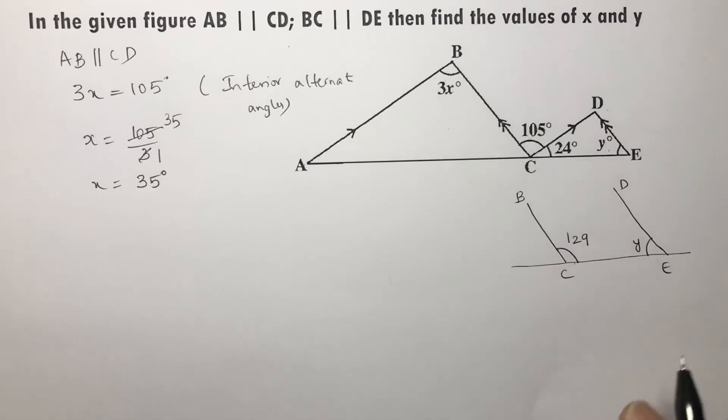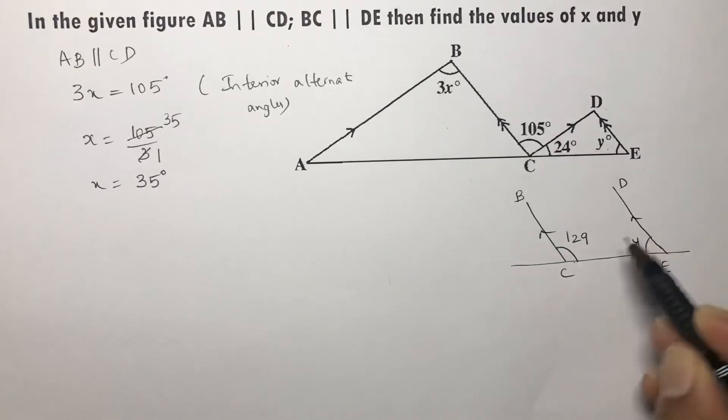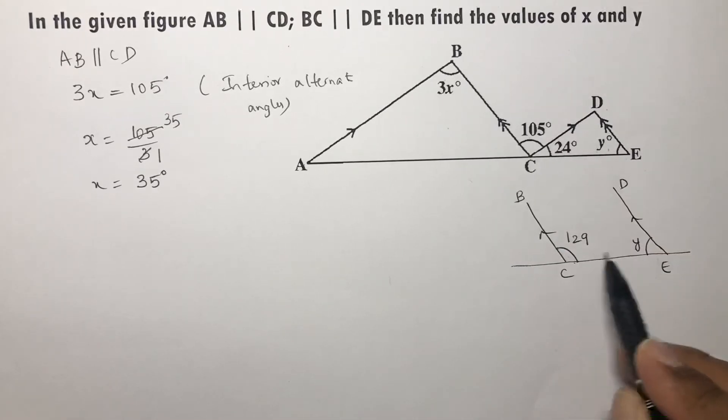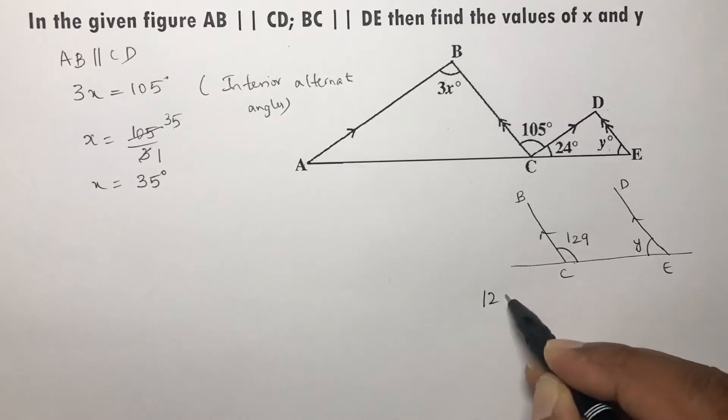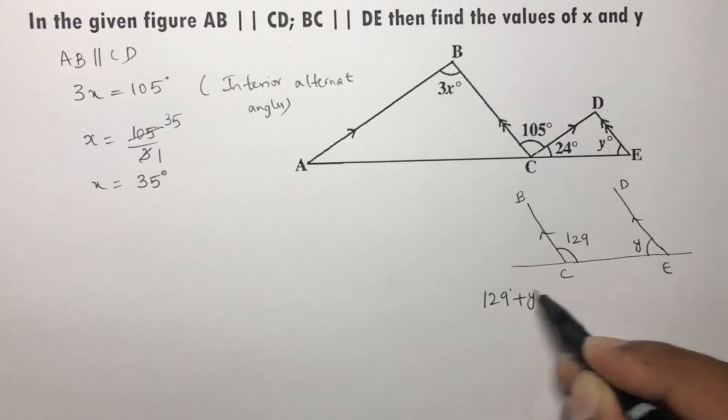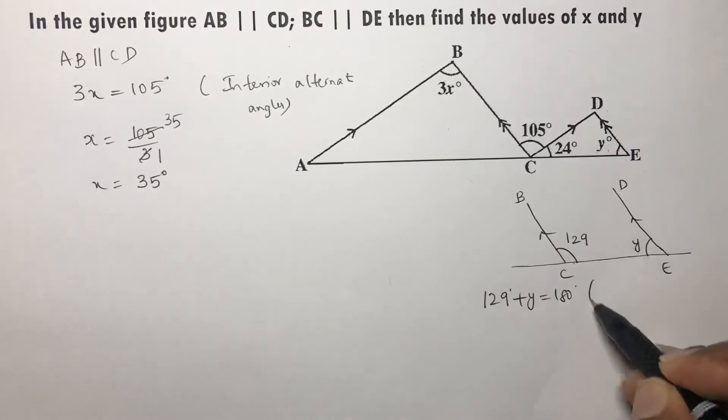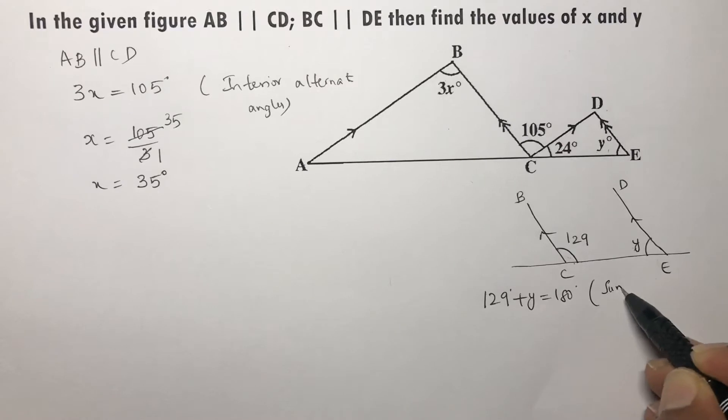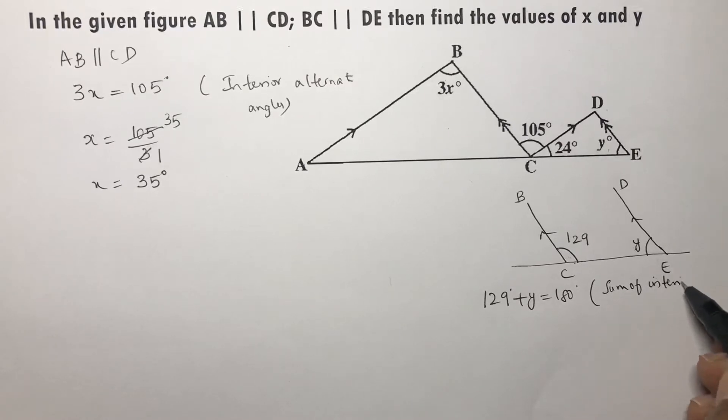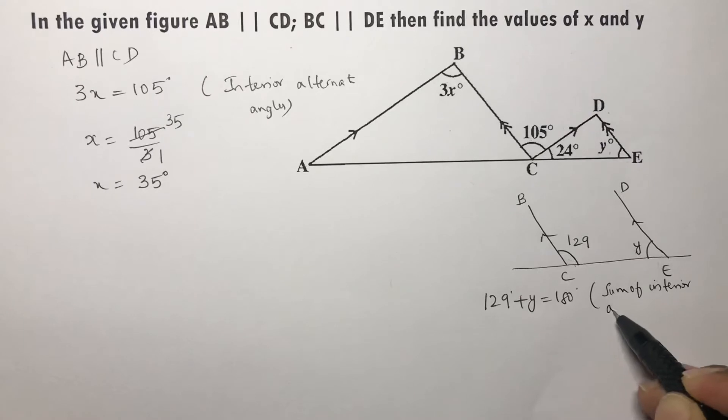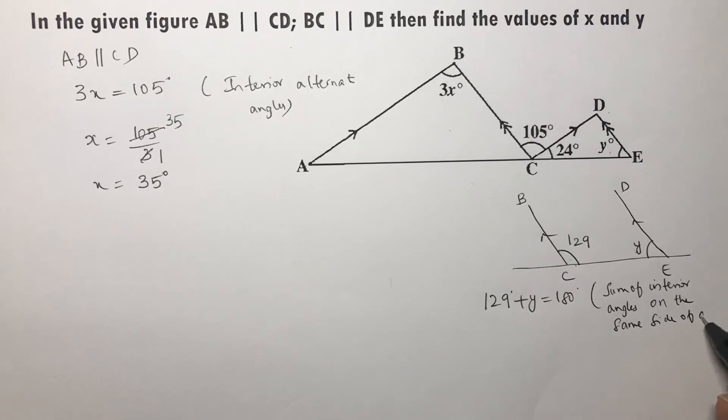Here you can use the property that sum of interior angles on the same side of a transversal are supplementary. So you can write 129 plus y equals 180 degrees.